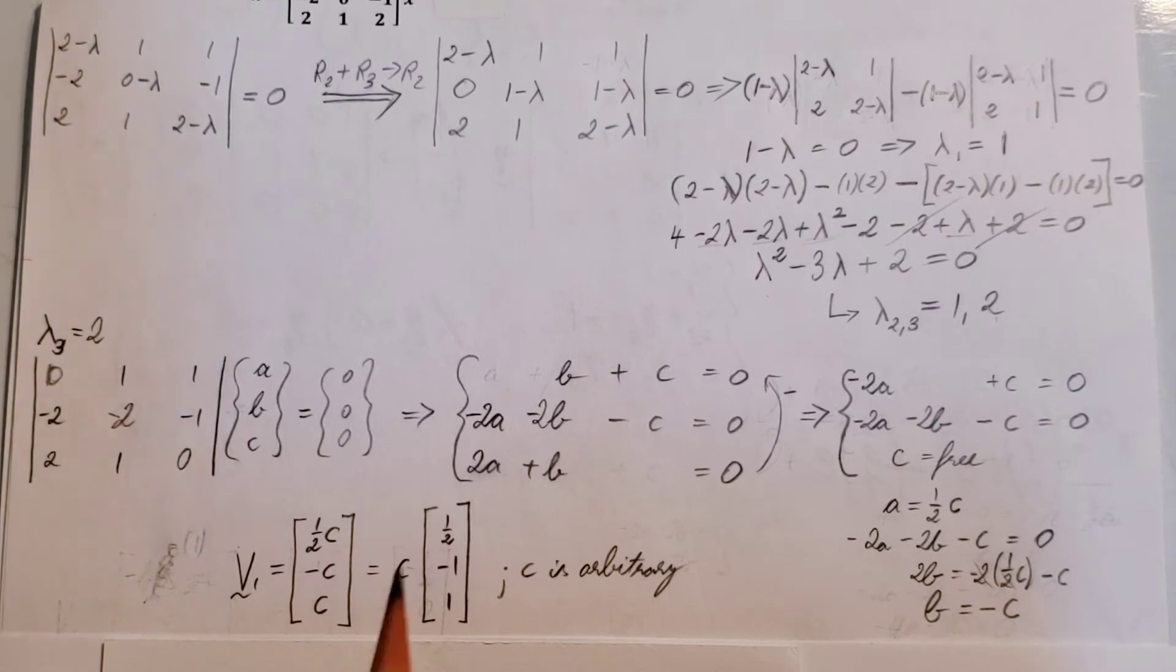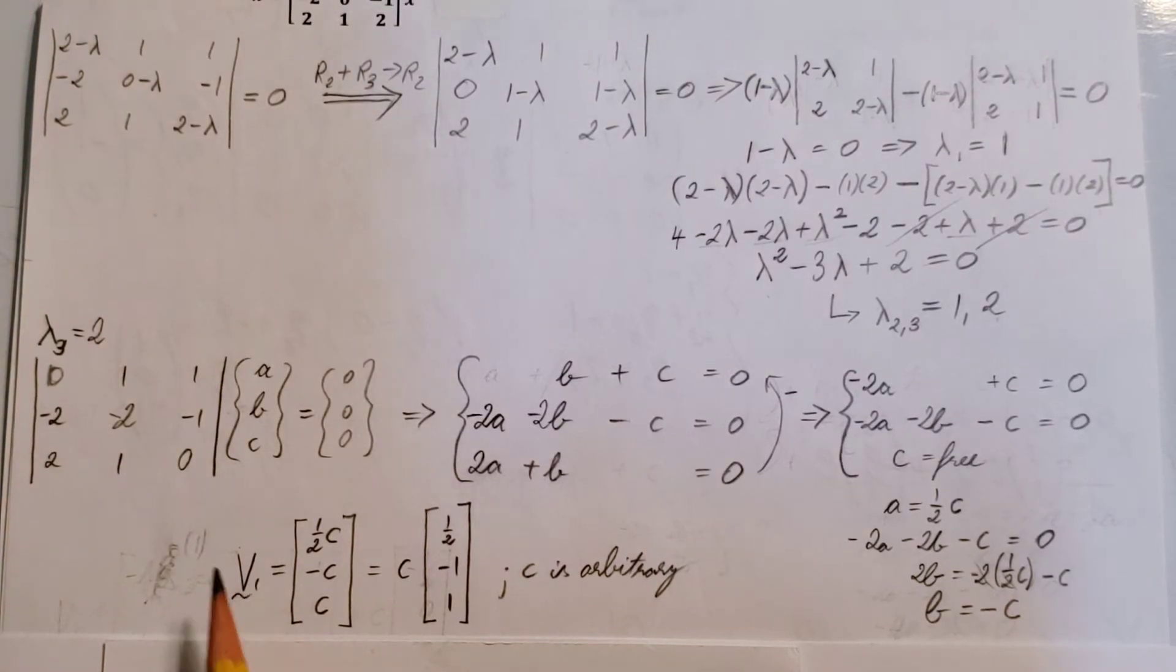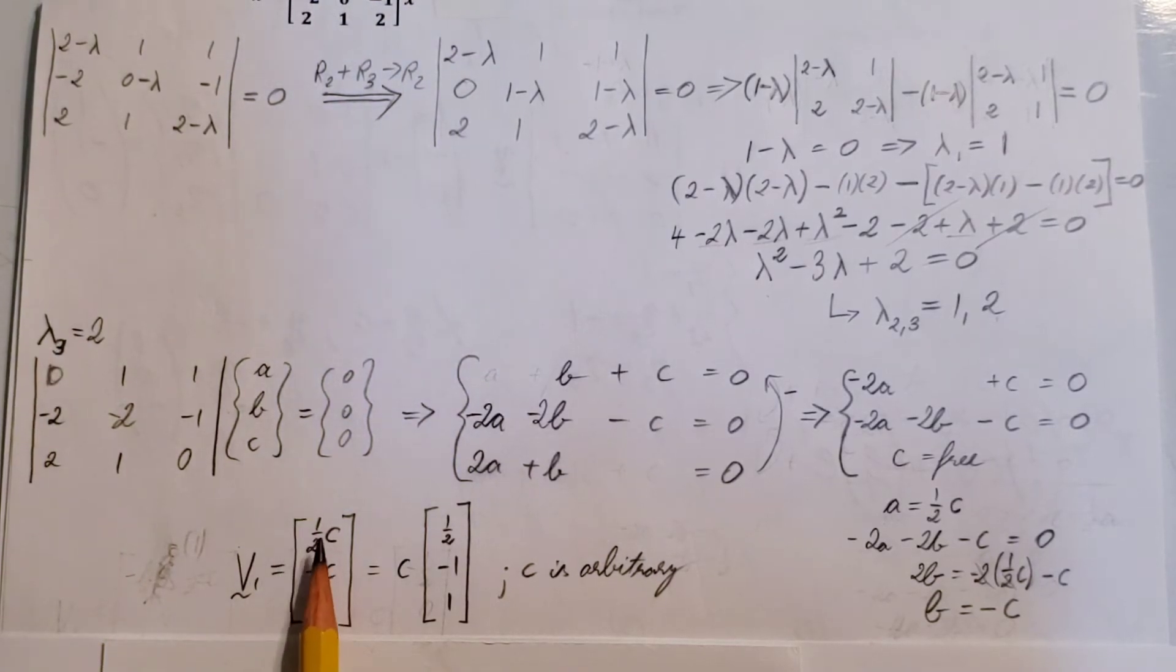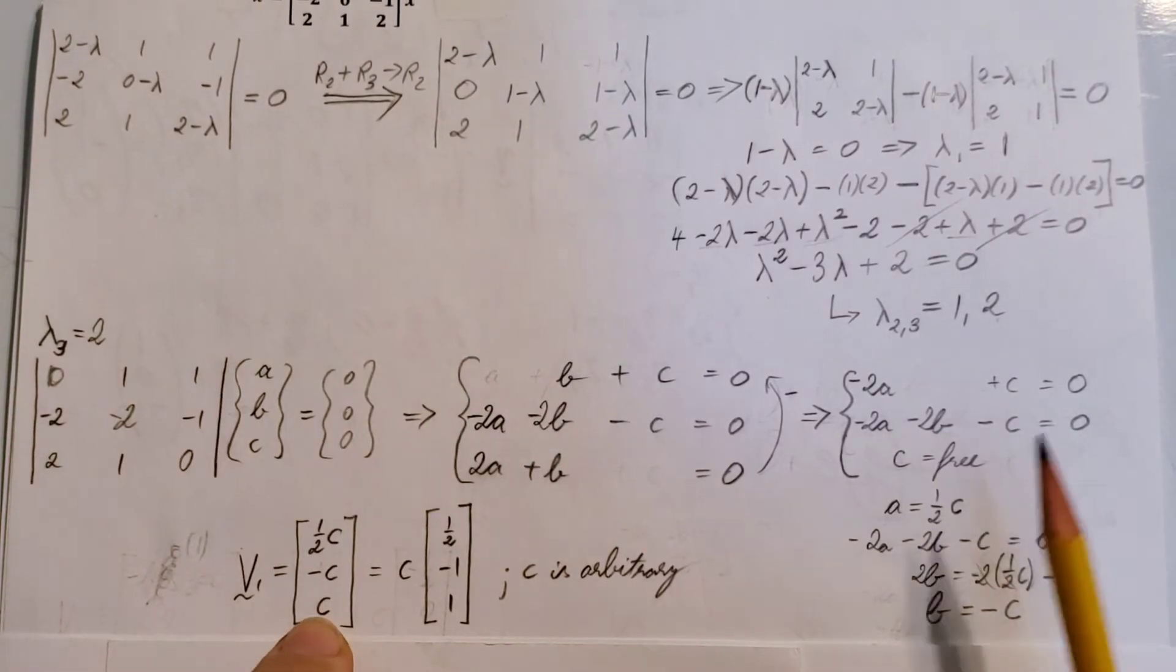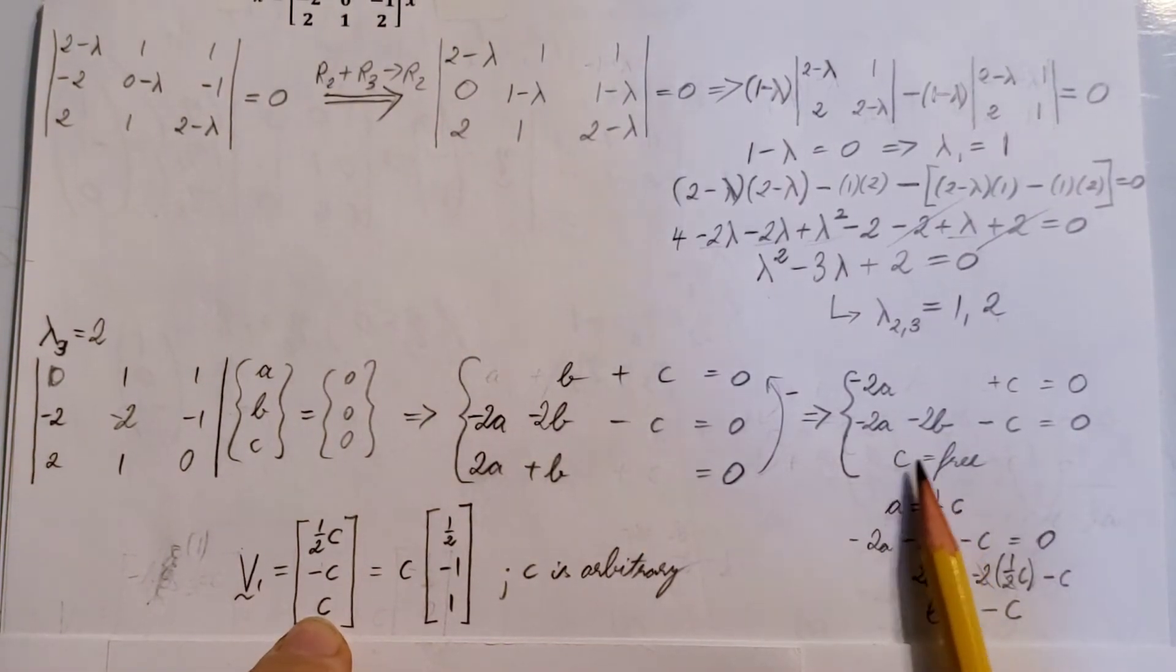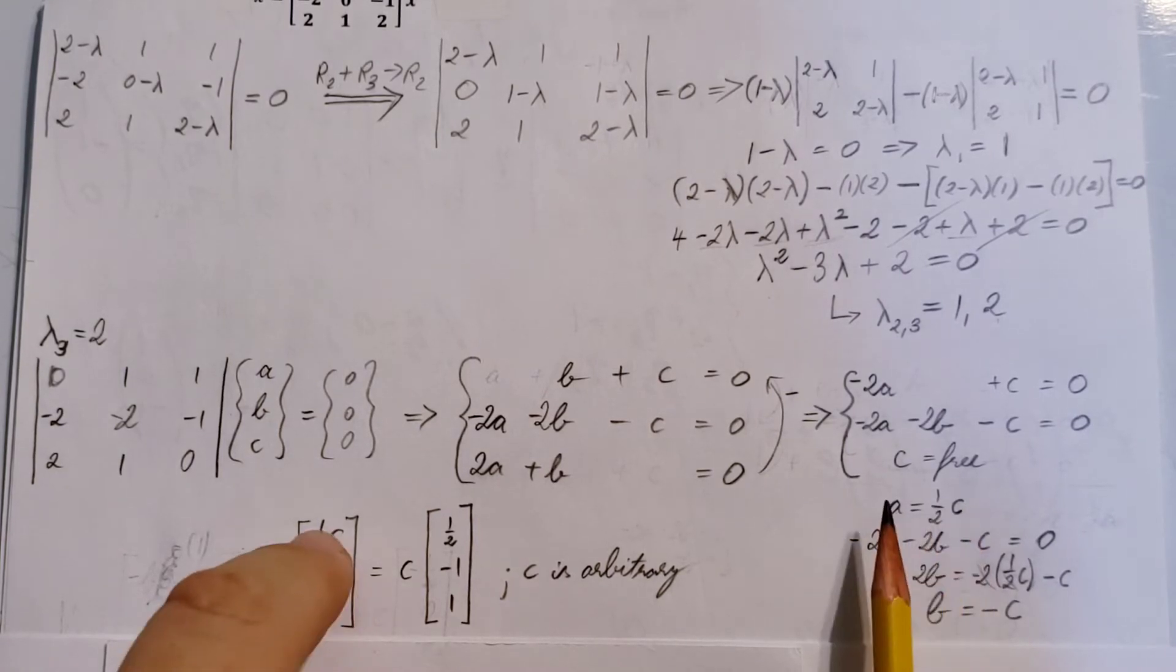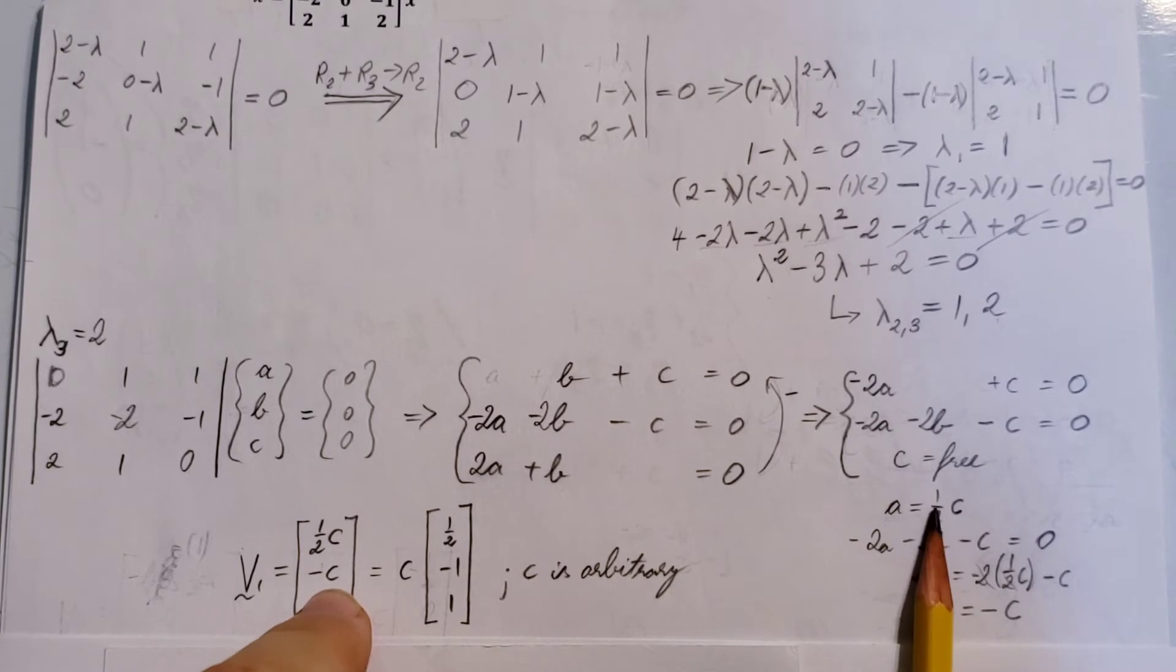And we can write up our first eigenvector corresponding to our first eigenvalue. And that is 1 half c, negative c, and c. How did we get these? The c, we said it's just c. C is c. That is arbitrary, right? So we're gonna write that there. Now, we found b is equal to negative c. So put it in. And we also found that a is 1 half c. Put it in. This is why we express them in terms of c. So we can build up this.